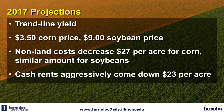Now let's turn to 2017. For 2017 projections, we're going to look at trend line yields — not as high as we had in 2016 but back to more normal levels. We're going to use a $3.50 corn price and $9 soybean price in these projections, which is pretty close to fall 2017 delivery prices right now and similar to Chicago Mercantile Exchange futures contracts. We're going to look at non-land costs decreasing $27 per acre for corn and a similar amount for soybeans.